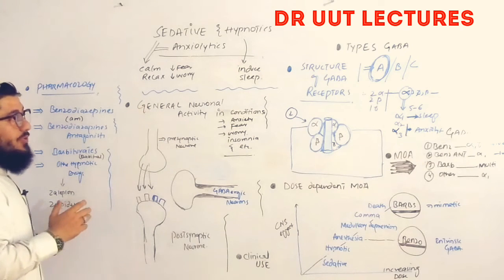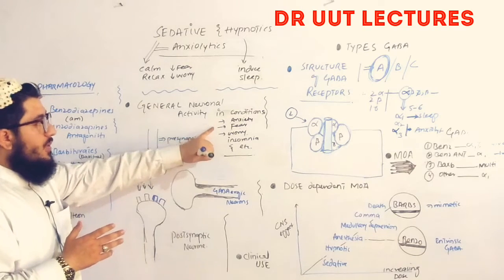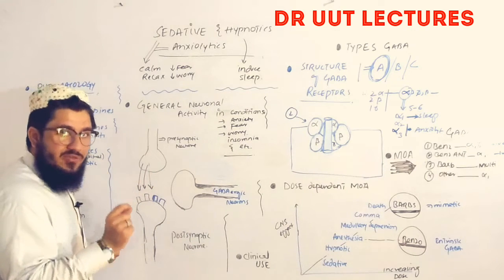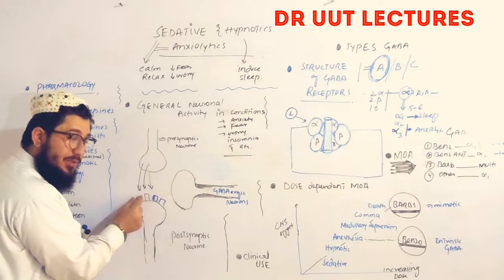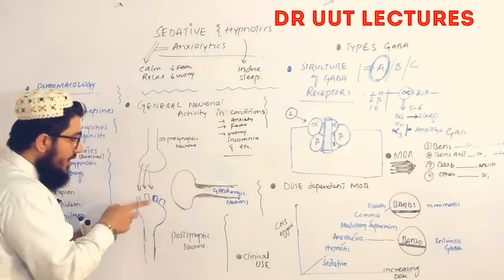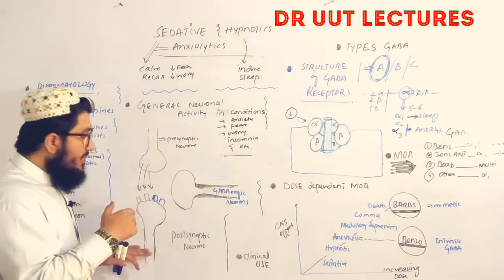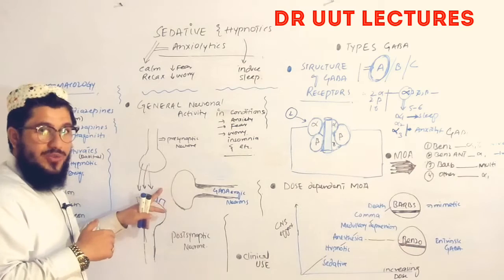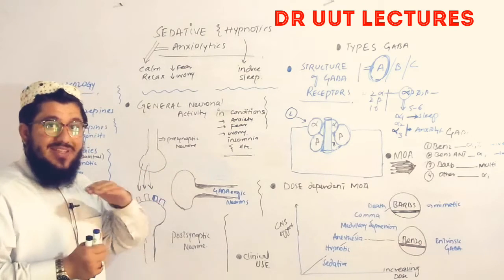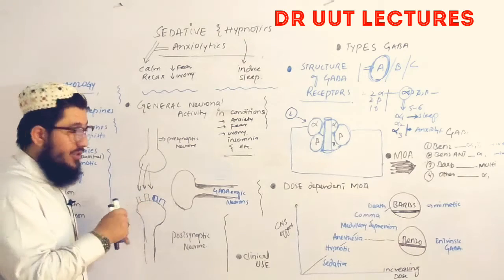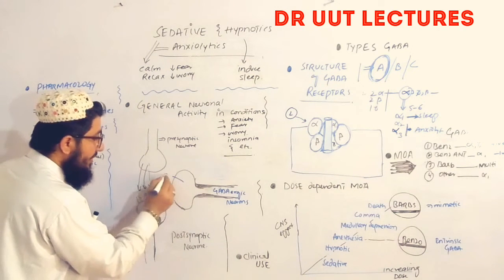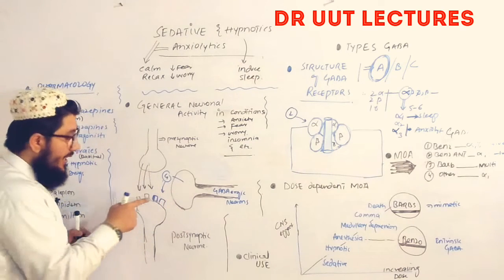Next, general neuronal activity in conditions like anxiety, fear, worry, and insomnia. From the presynaptic neuron, a neurotransmitter is released that binds to a specific receptor on the postsynaptic neuron, giving it an excitatory signal. To maintain a normal state, there is also an inhibitory mechanism: the GABAergic neuron releases the GABA neurotransmitter, which comes and binds to its own specific GABA receptor.